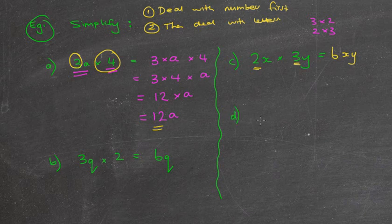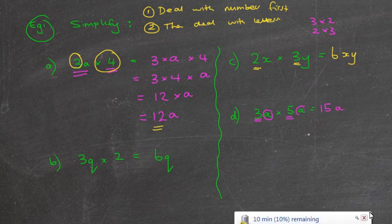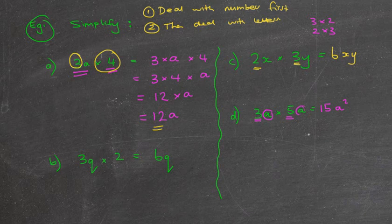What about this one? I'm going to do 3a times 5a. Can you do this one? A little bit harder. Well, we've got 3 times 5, which is 15. So we deal with the numbers first. Then a times a, remember, it's not a plus a. It's a times a, which you're multiplying it by itself, which is going to be a squared. You'll notice we've done all the multiplying.